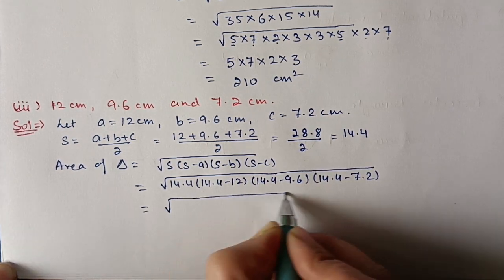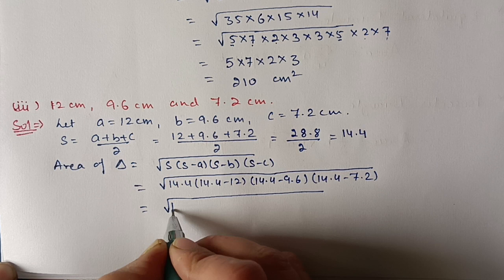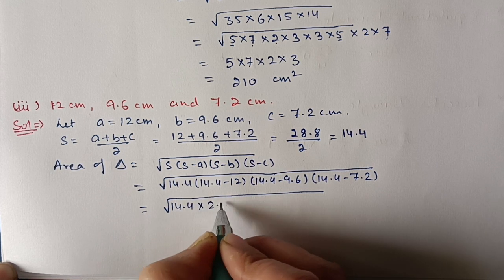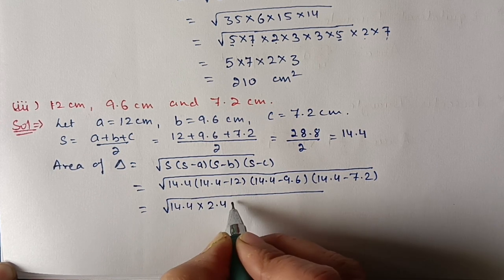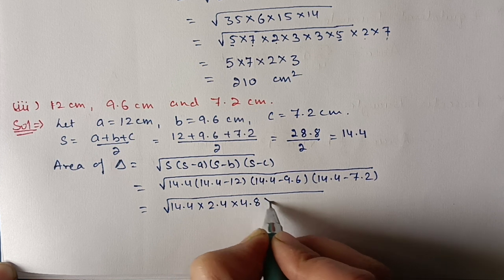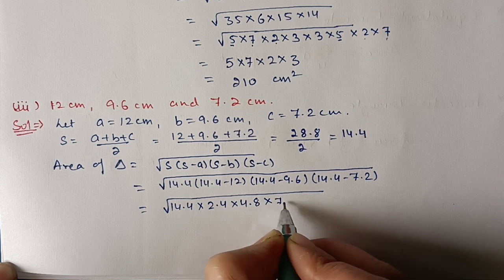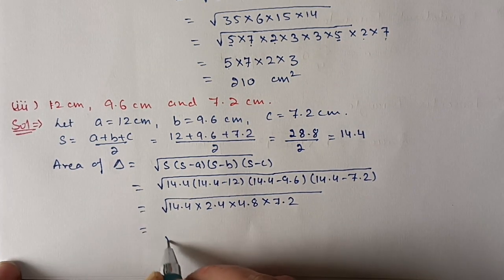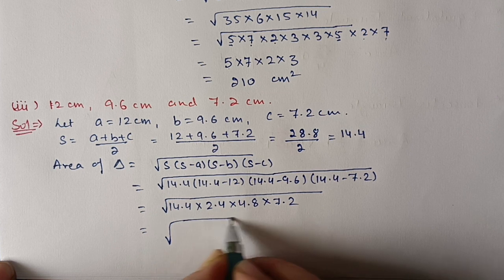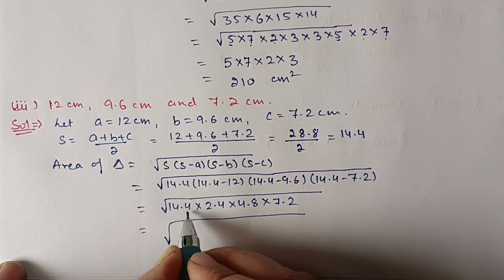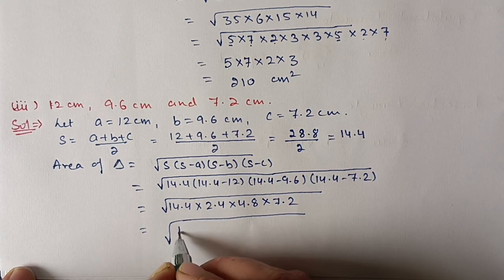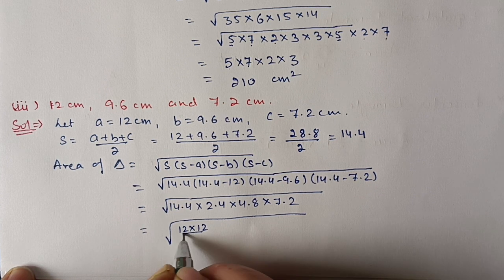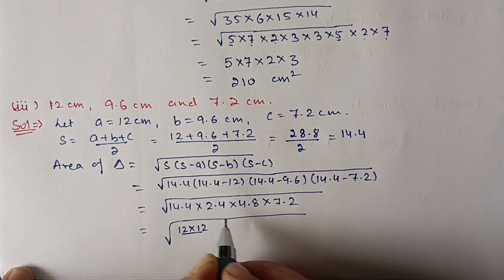After subtraction we get 14.4, 2.4, 4.8, and 7.2. We can remove the decimals and do the prime factorization of all numbers. We write 14.4 as 12 × something, writing 12 in pairs.